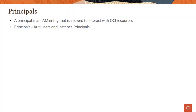The first thing you need to understand is who is a principal. Think about a principal as an entity that is allowed to interact with OCI resources. There are two kinds of principals possible in OCI: the first one are actual people — let's call them users — and then the second one is something called instance principals.